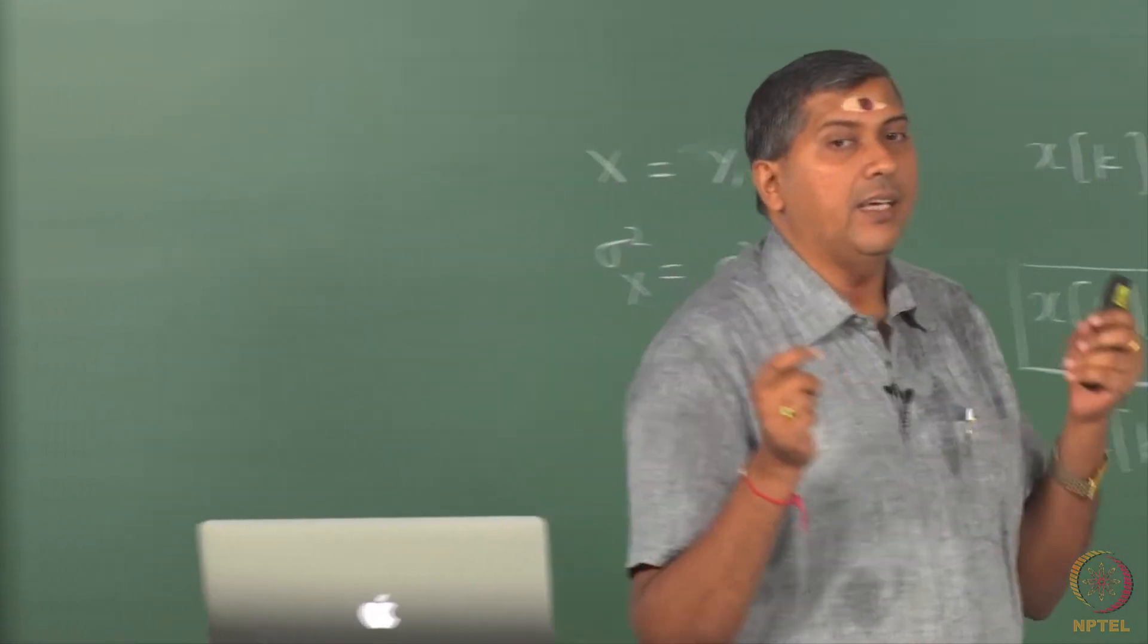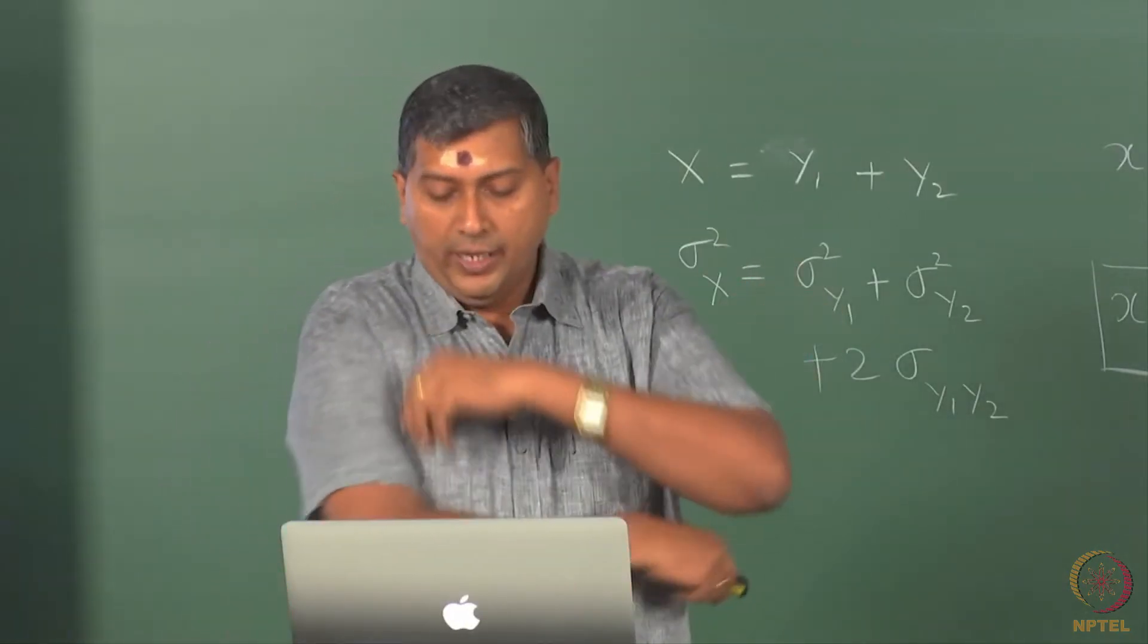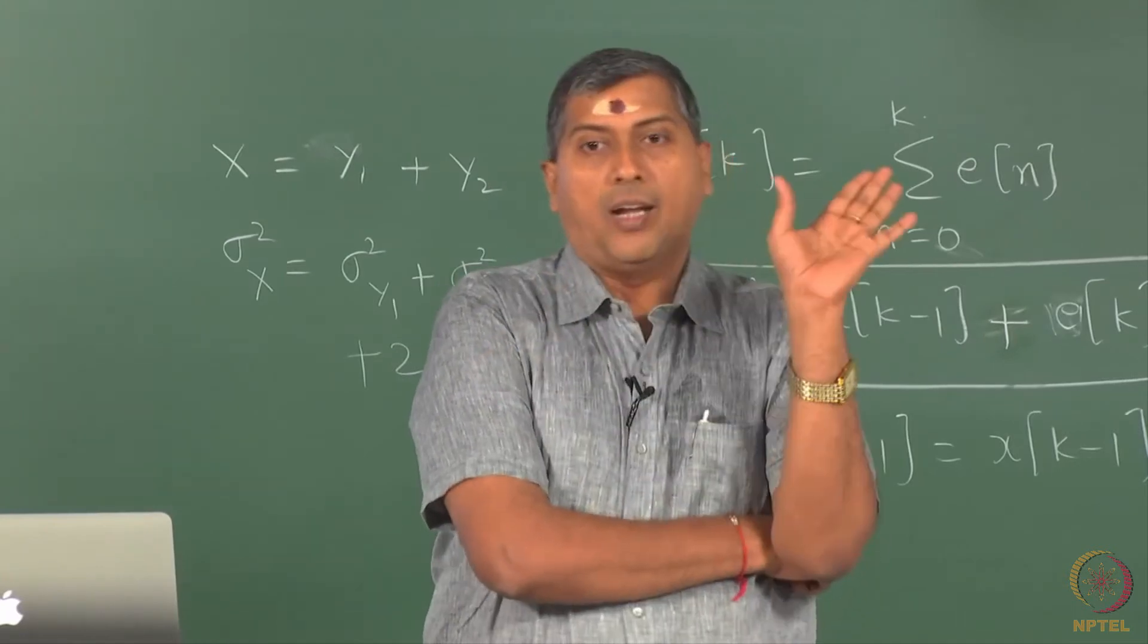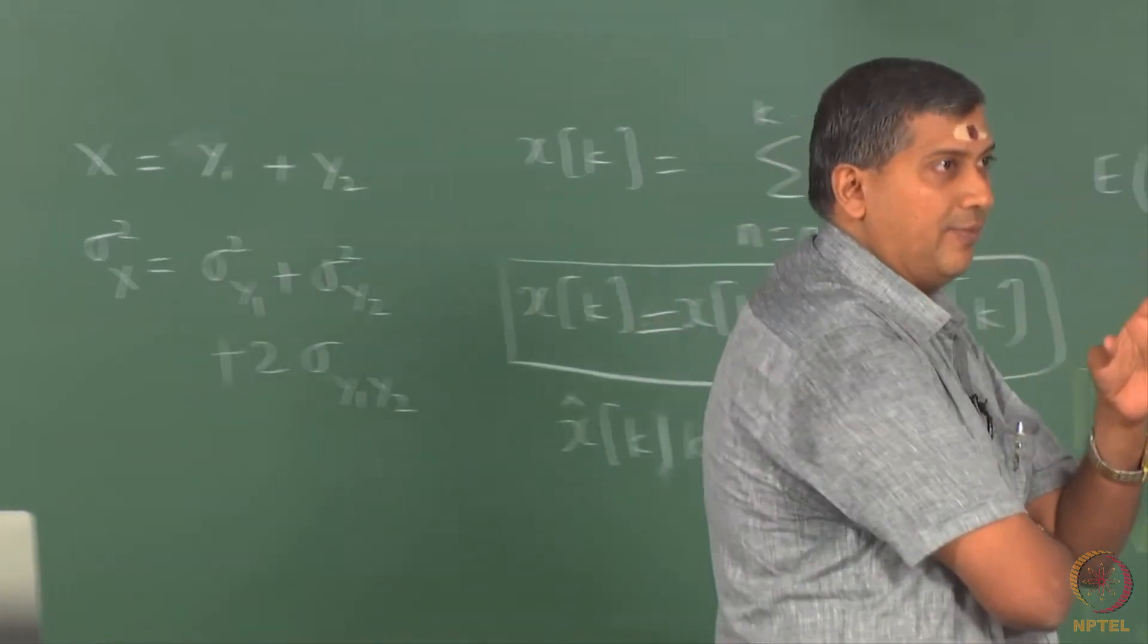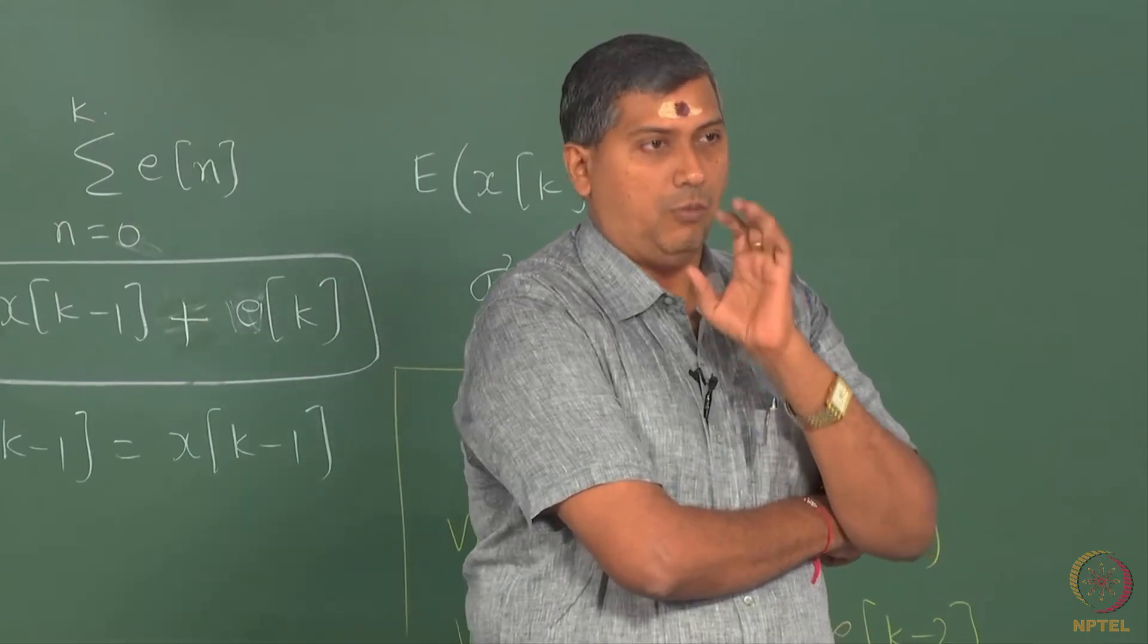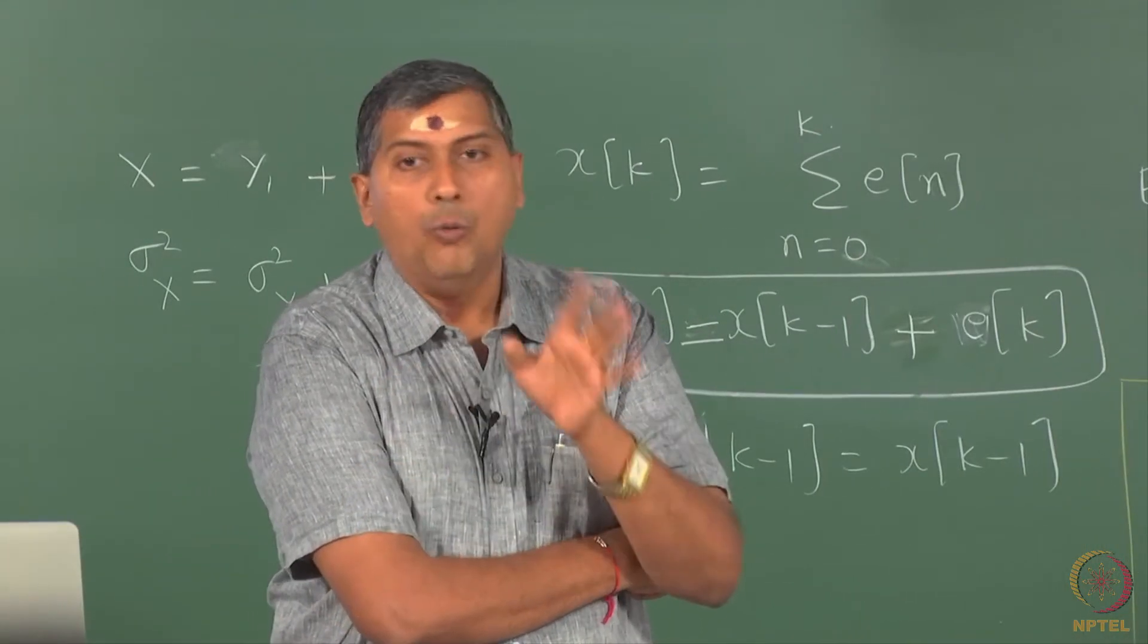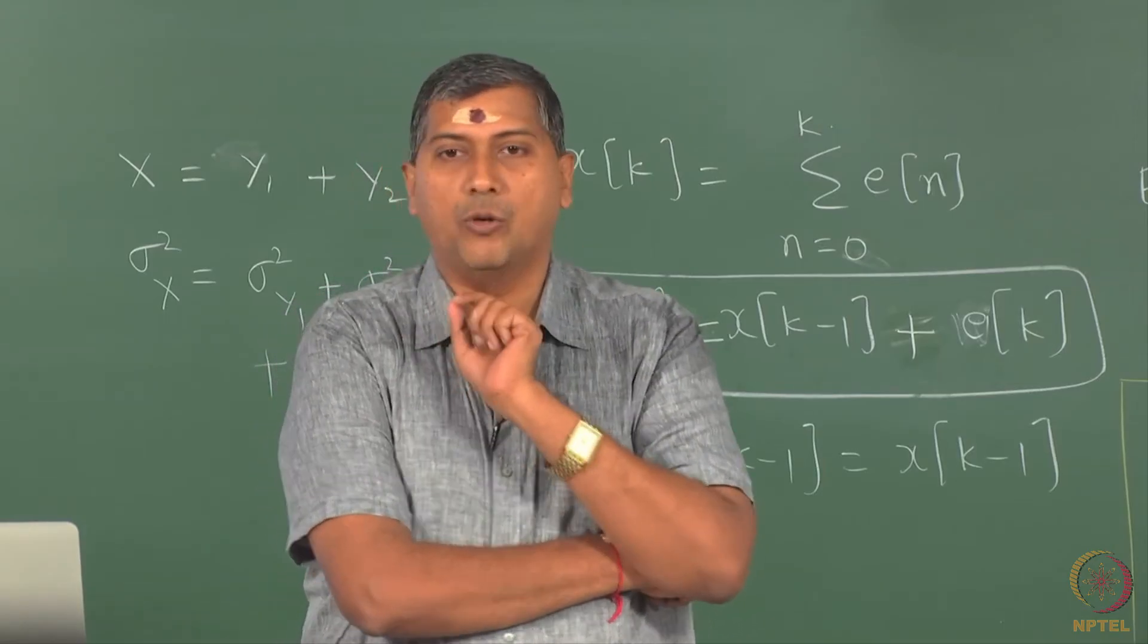If I take an IID random process, there is no need to say it is stationary. It is ergodic in the sense of mean, for example. Ergodicity is not a universal property. You have to actually look at ergodic in what property? If I were to look at the mean, is this IID process ergodic in mean? What this means is, if I were to compute the average in time, will that average converge to the true mean?